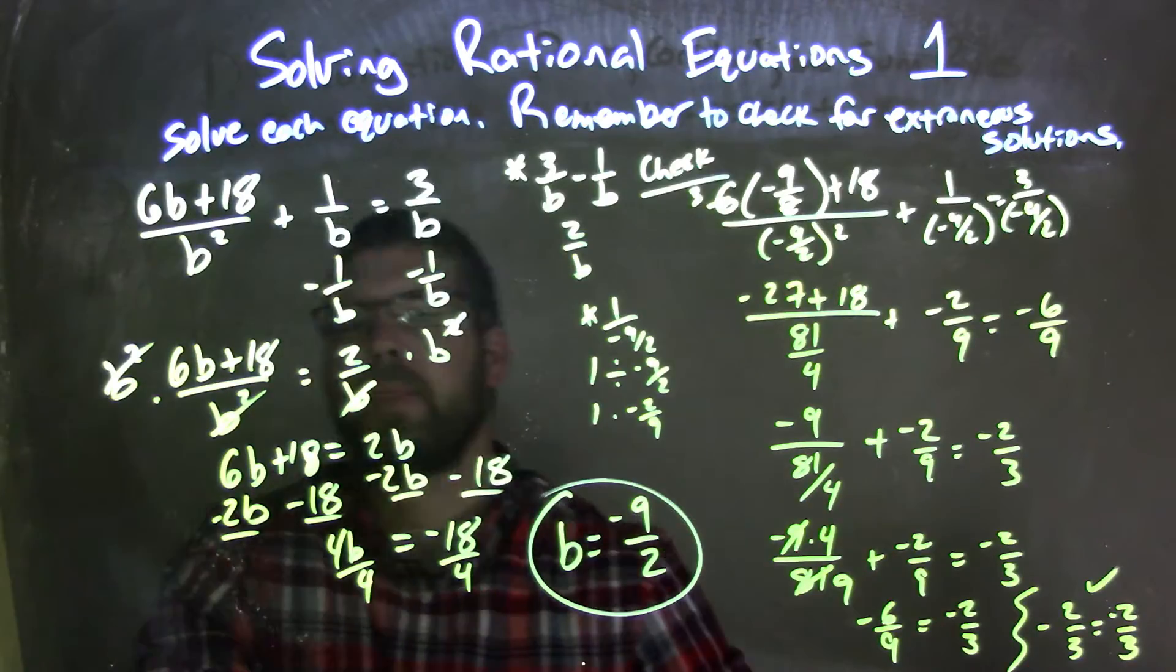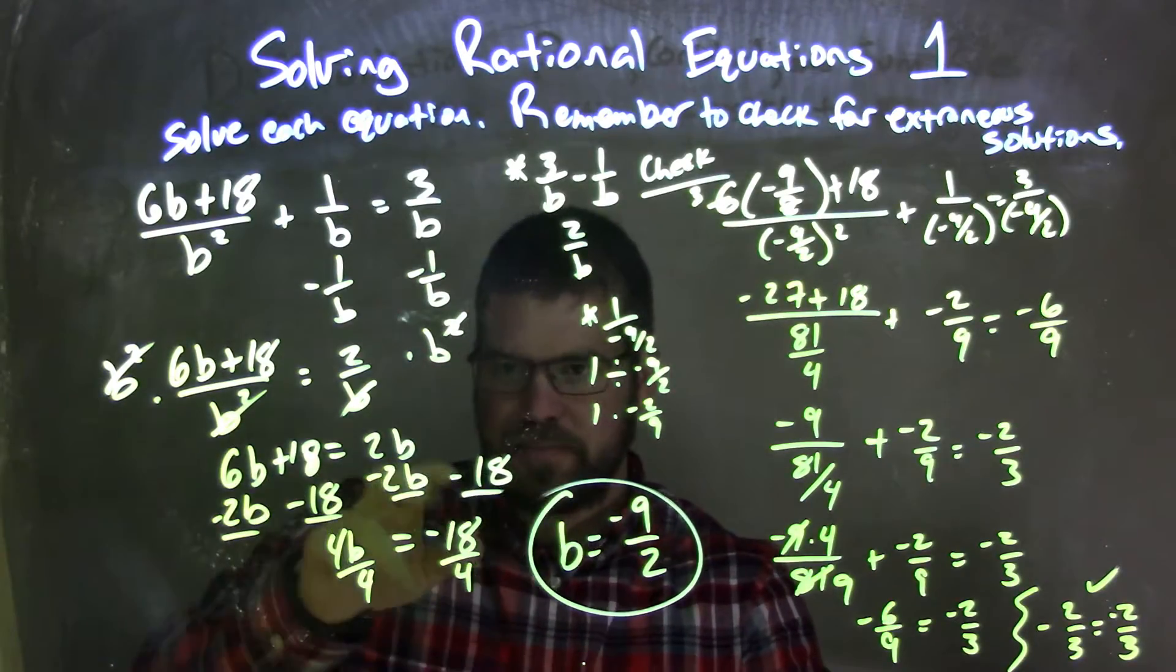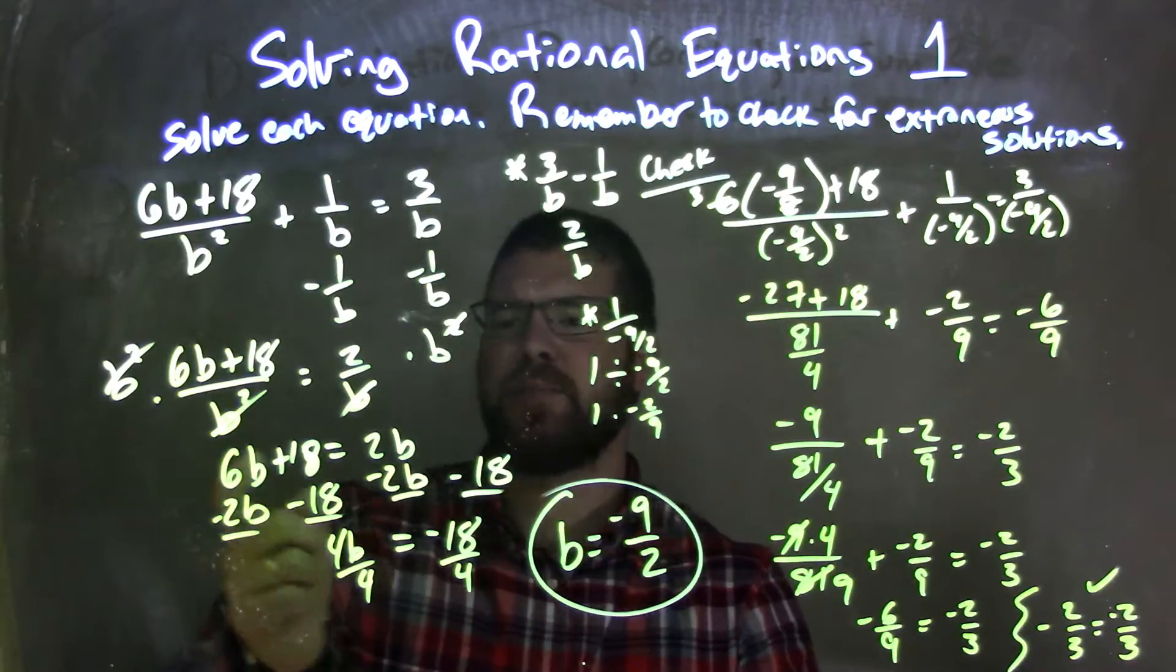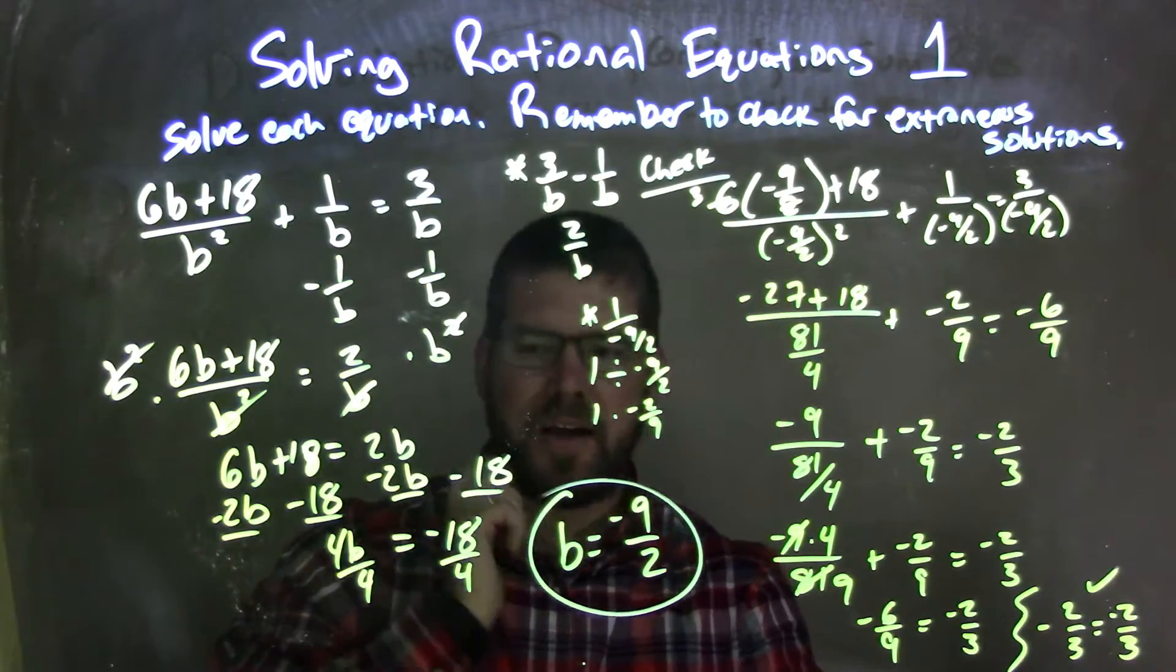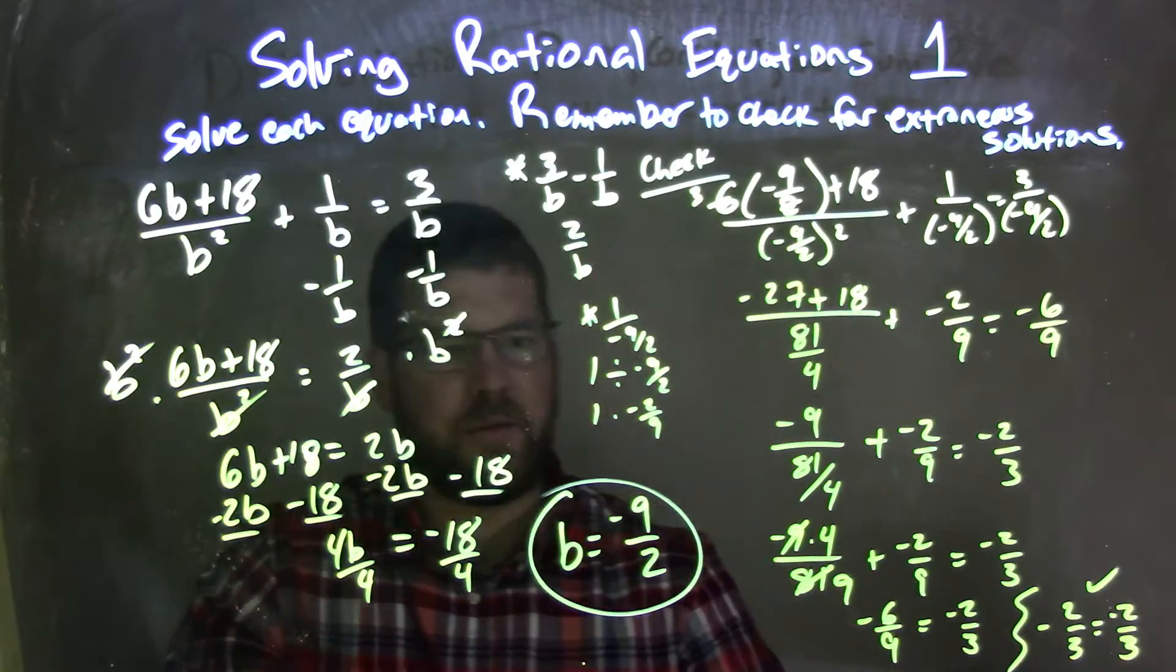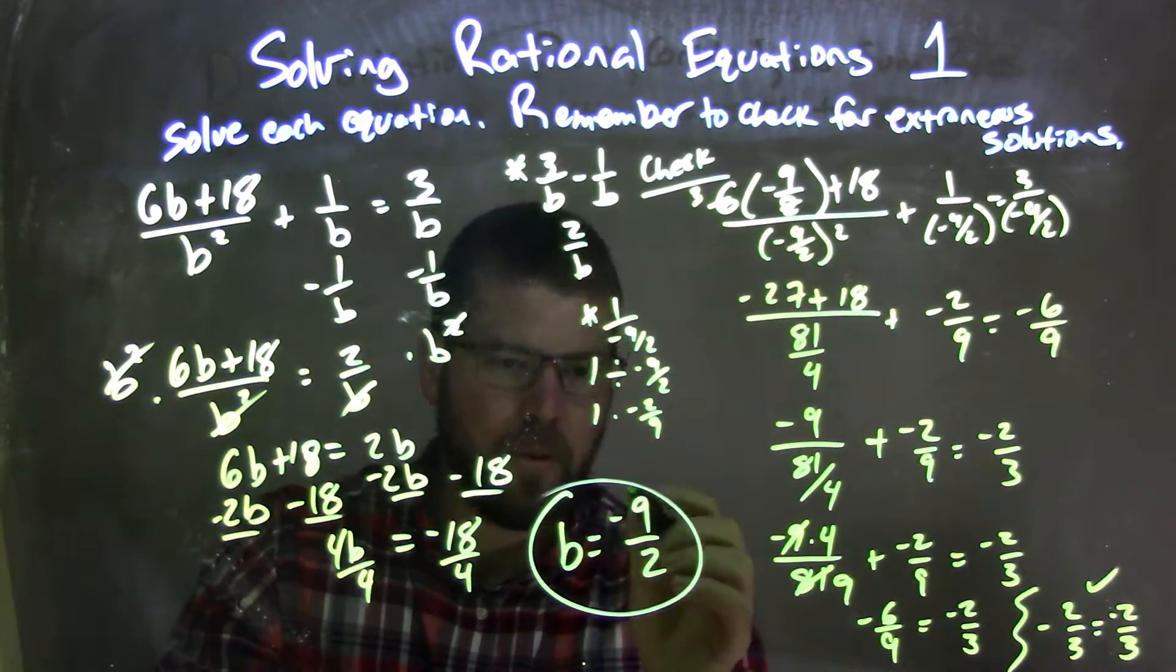Then I multiply b squared to both sides, giving me now 2b on the right and 6b plus 18 on the left. I subtracted 2b to both sides and 18 to both sides, giving me 4b on the left and negative 18 on the right, divided by 4, giving me b equals negative 9 halves.